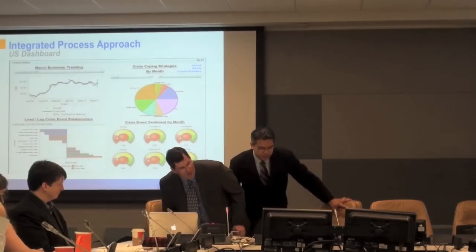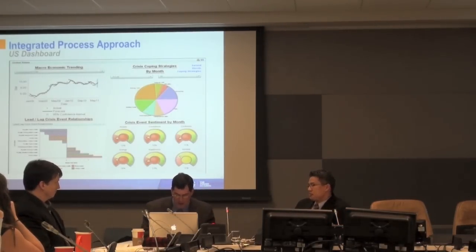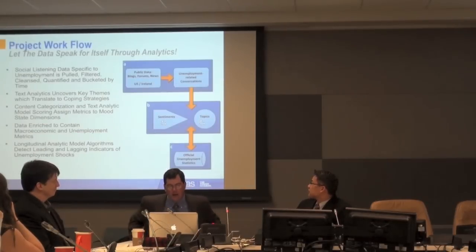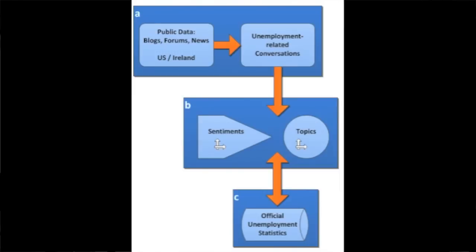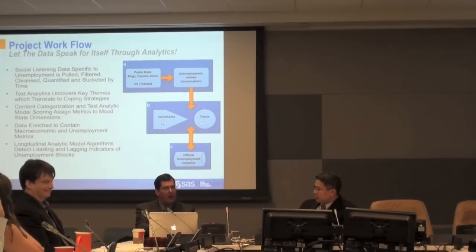As you can imagine, it's a huge amount of work going from a mountain of unstructured data and putting it into a quantitative form for analytics. The SAS team's approach is to first pull data from news groups, forums, blogs, and also traditional social media sources like Twitter and Facebook. We then go through due diligence to ensure confidence in our corpus of documentation — a filtering and cleansing process — and then a two-stage process of quantifying the data: first with respect to key themes, and then also with respect to sentiment.